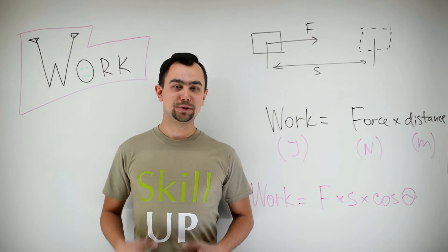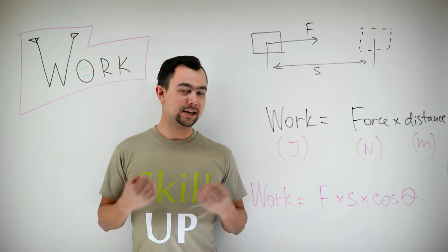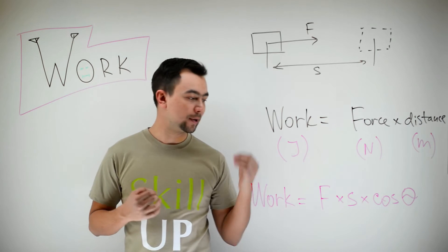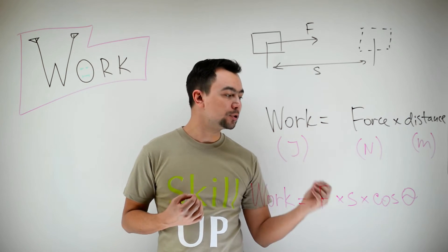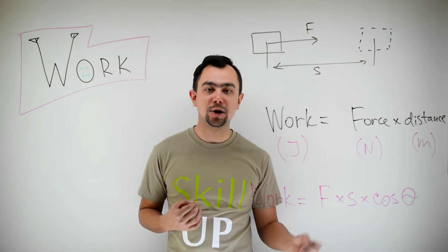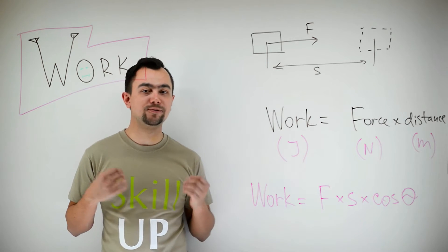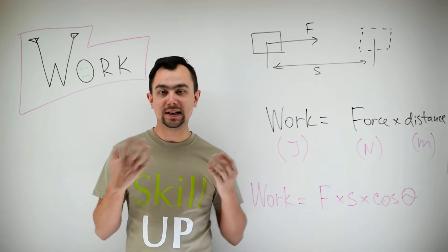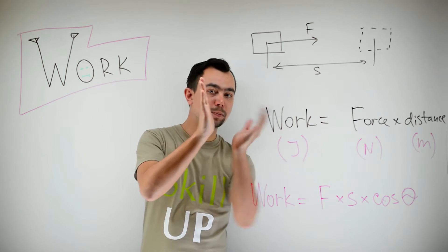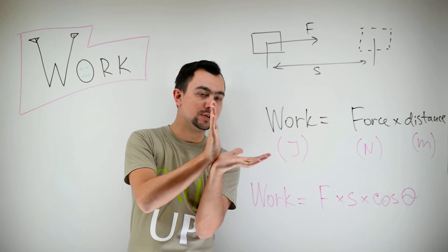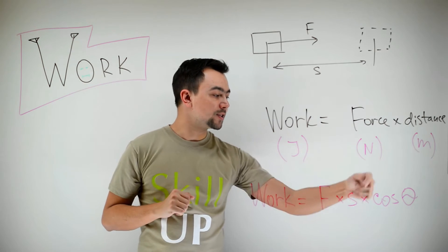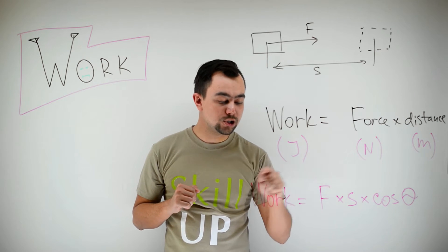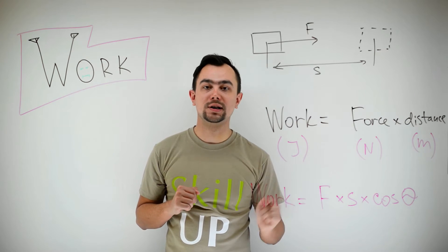So, we'll have to rewrite the equation like this. Work is force multiplied by displacement and multiplied by the cosine of the angle between force and displacement. That is, when the force is perpendicular to the displacement, cosine 90 is zero, and so the total work is zero. If the force is perpendicular to displacement, you're not doing any work.